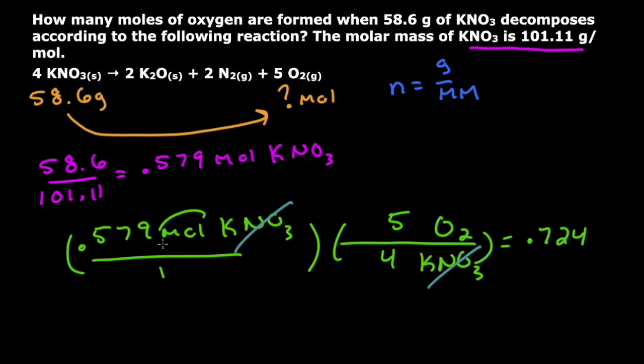And that will then be moles of oxygen like this. So I'm going to have 0.724 moles of oxygen, which is going to be the O₂ because it's diatomic like this. So this right here will be the answer.